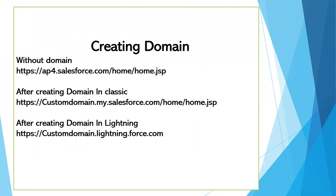Before creating a domain, your URLs look like ap4.salesforce.com. After creating a custom domain, your URL looks like yourcustomdomain.my.salesforce.com. For example in classic pages, once you click the 'Switch to Lightning' button the domain looks like lightning.force.com. We need to observe these two domains — after creating a domain versus without a domain — to understand the difference between classic and Lightning domains.